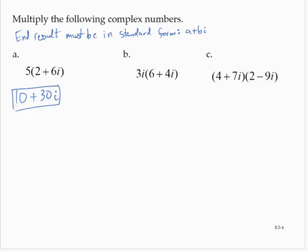3i times 6 plus 4i, applying the distributive property, yields 18i plus 12i squared. But this is not acceptable, because it is not in the standard form. We need the standard form a plus bi.